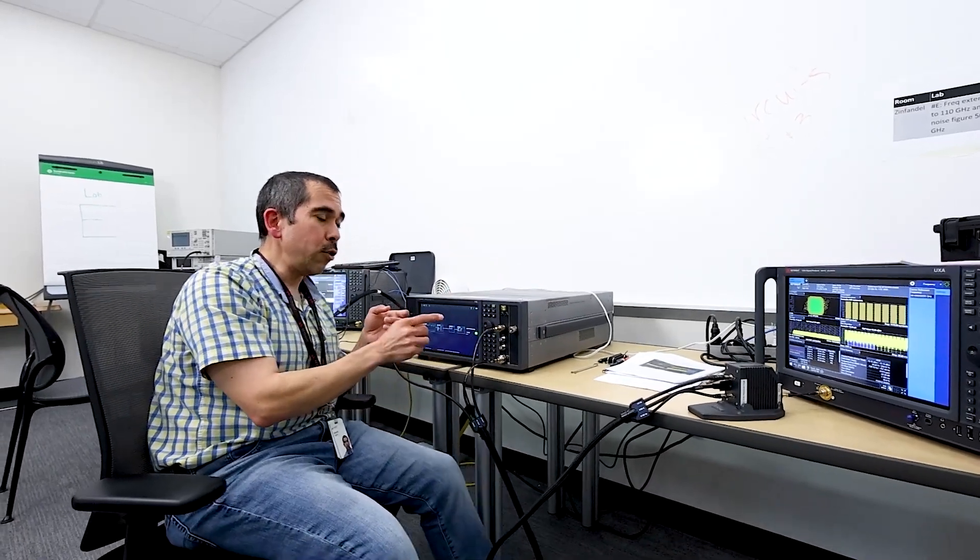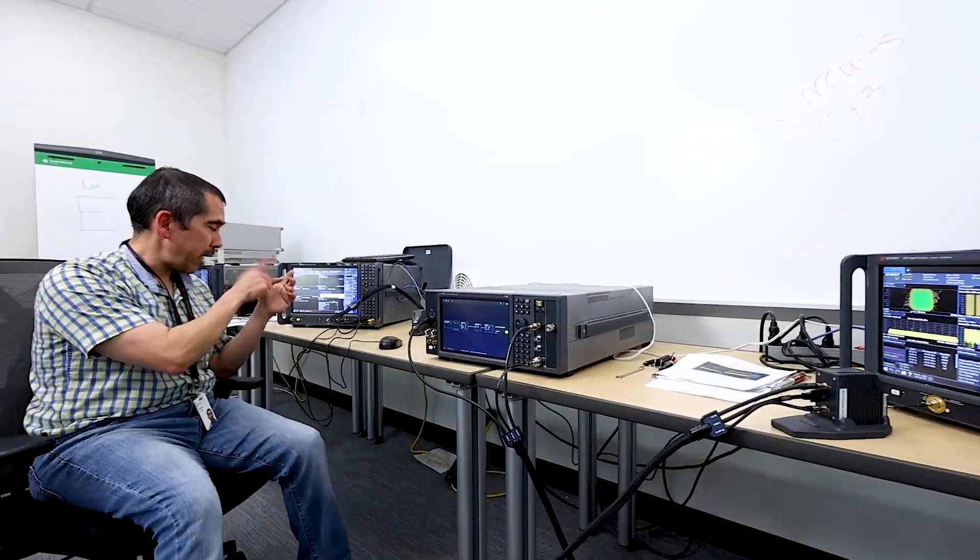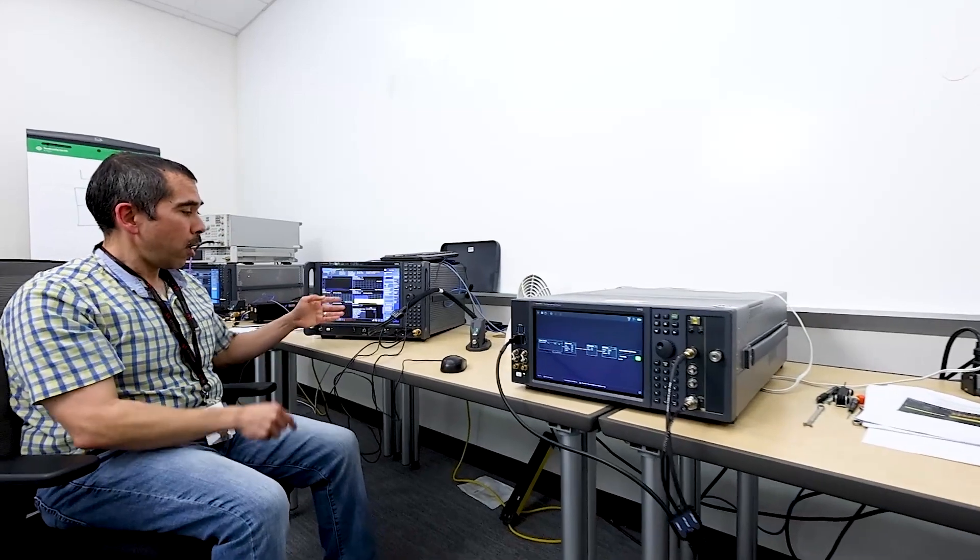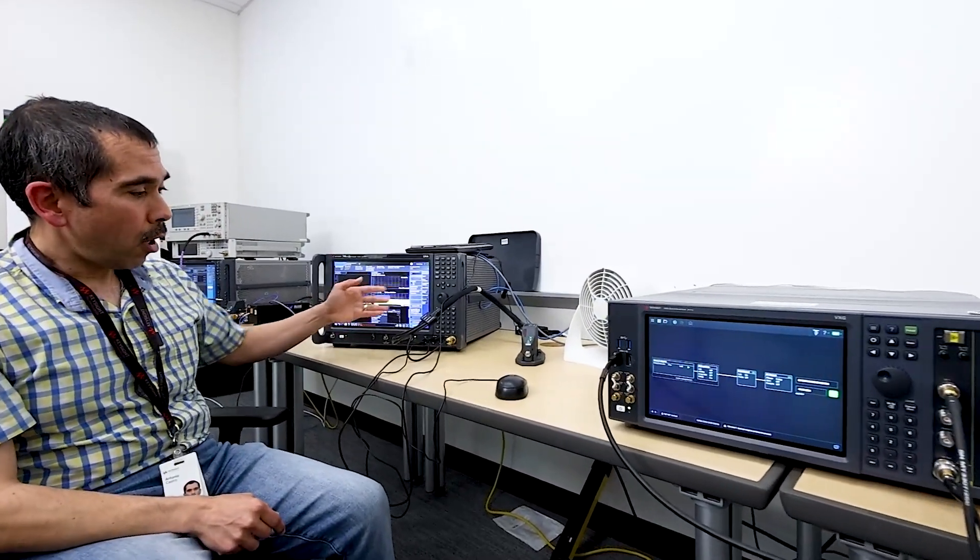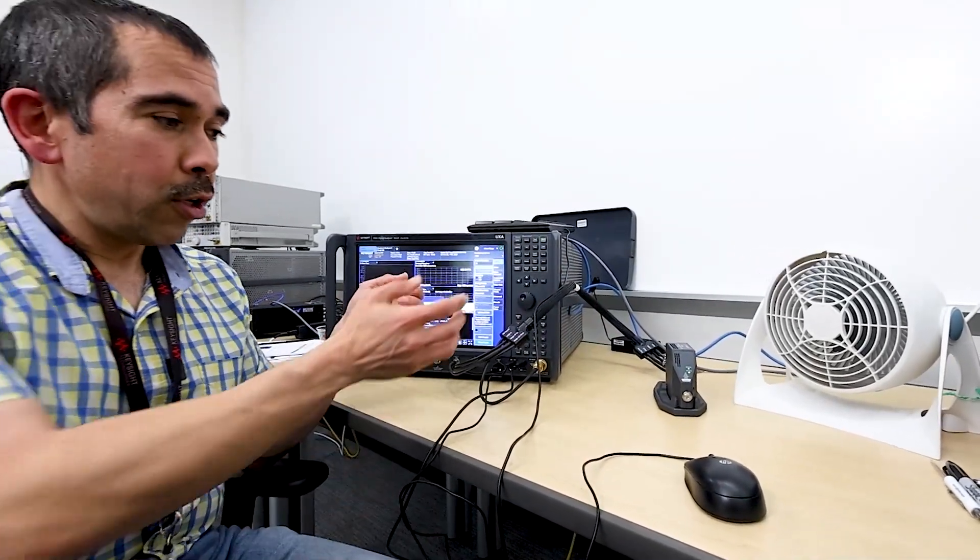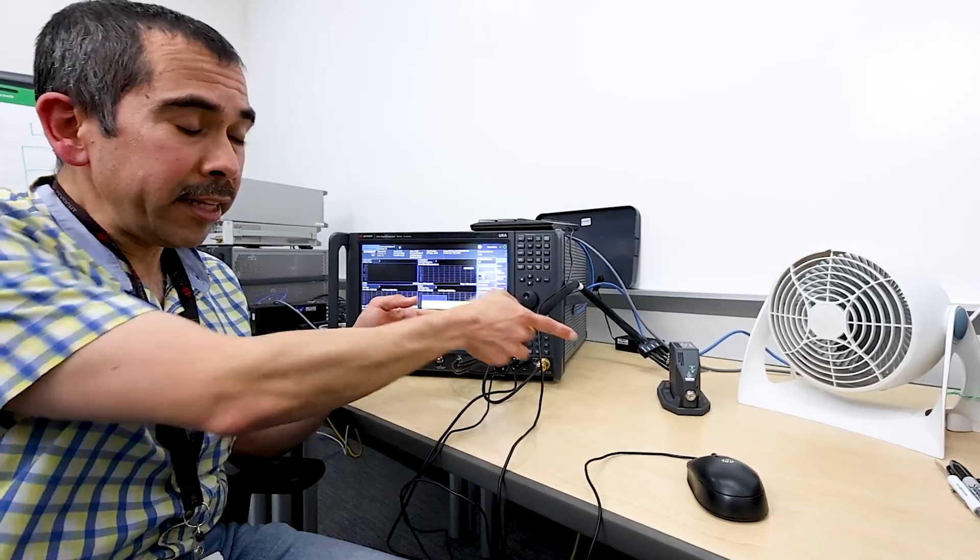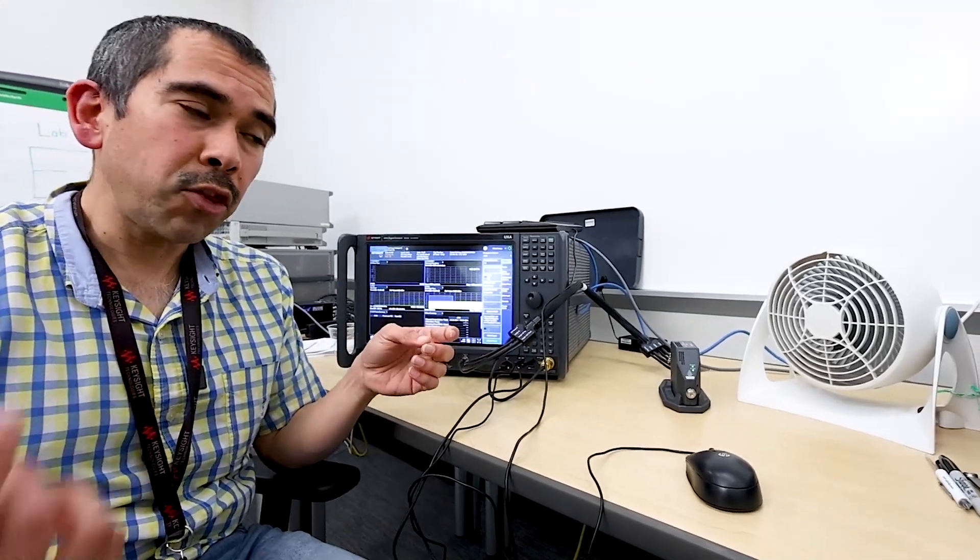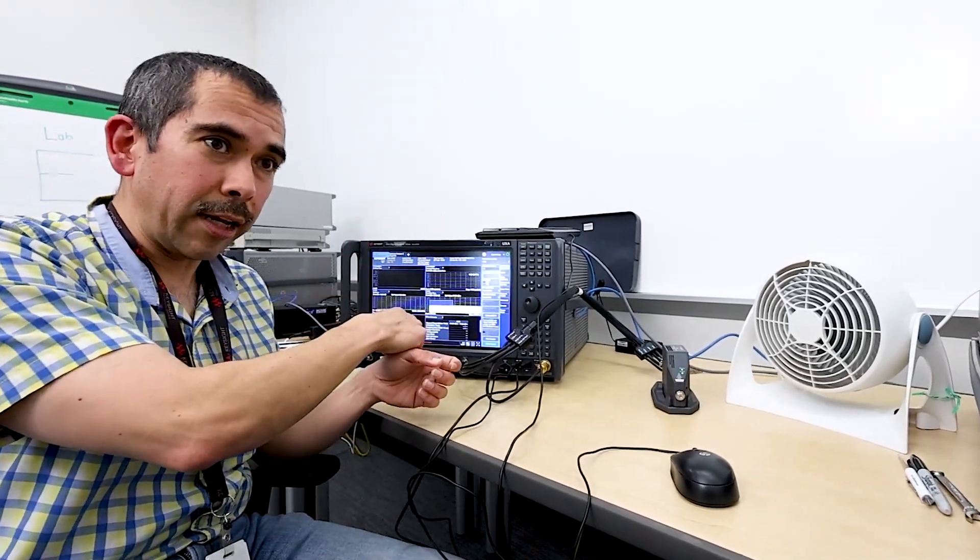Or they can use the N9042B, which has the option of a frequency extender. This frequency extender allows customers to bring it to the DUT, not the DUT to the analyzer.